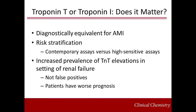In terms of risk stratification, troponin T or I may be utilized, but it is clear that it is predominantly the use of a high-sensitive assay that has benefit over contemporary assays. There is an increased prevalence of troponin T elevations in the setting of renal failure, and these are not to be considered false positives, but related to overall dysfunction in the cardiorenal system. Patients with a chronic low-level elevation of troponin have a worse prognosis and increased mortality.